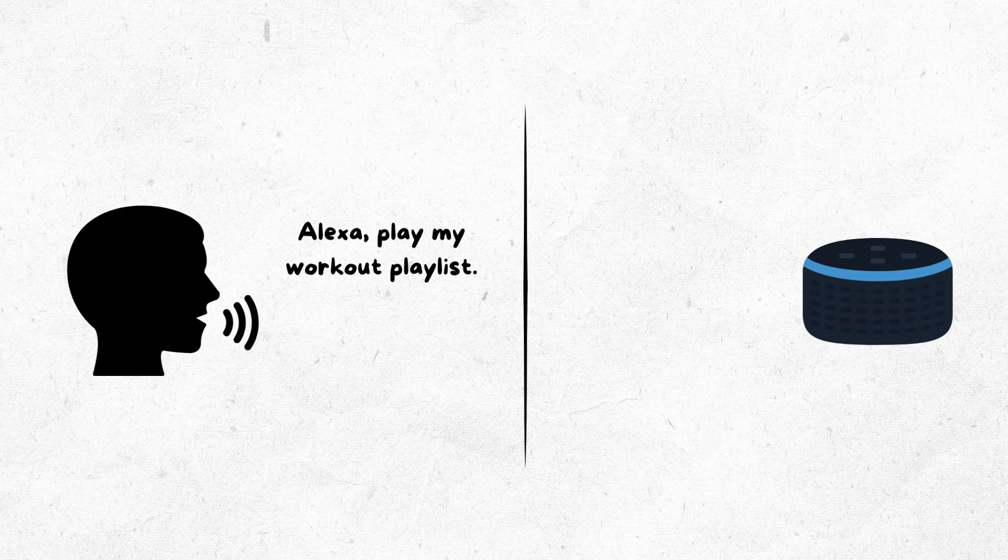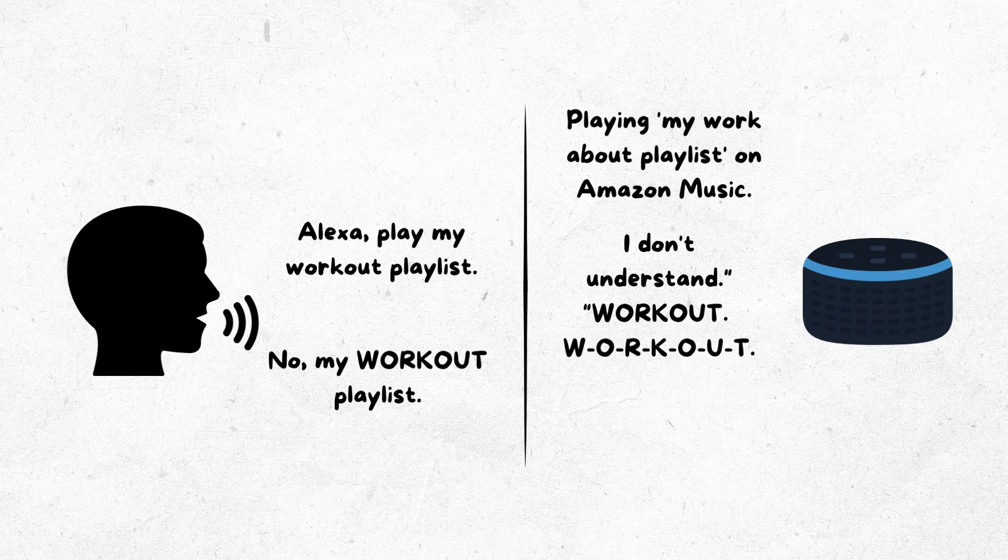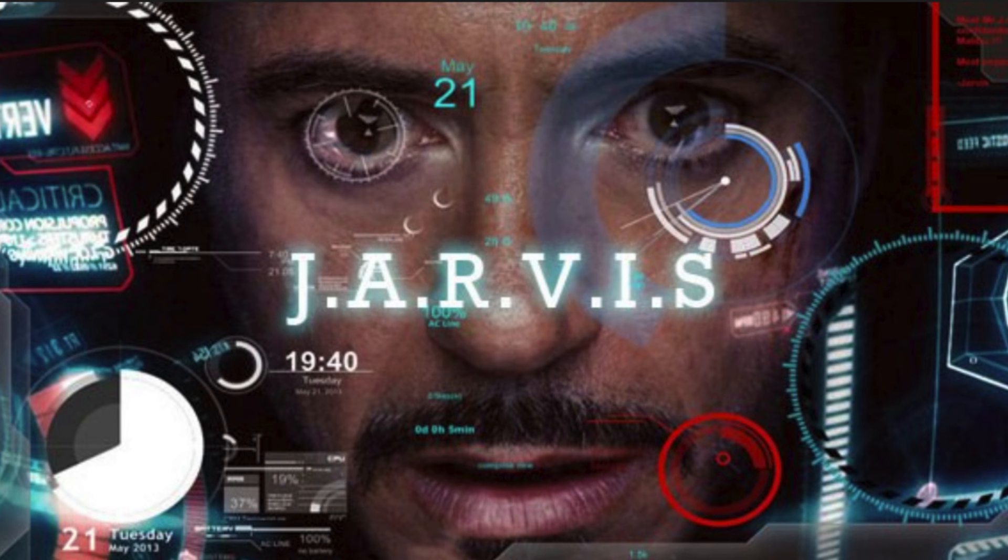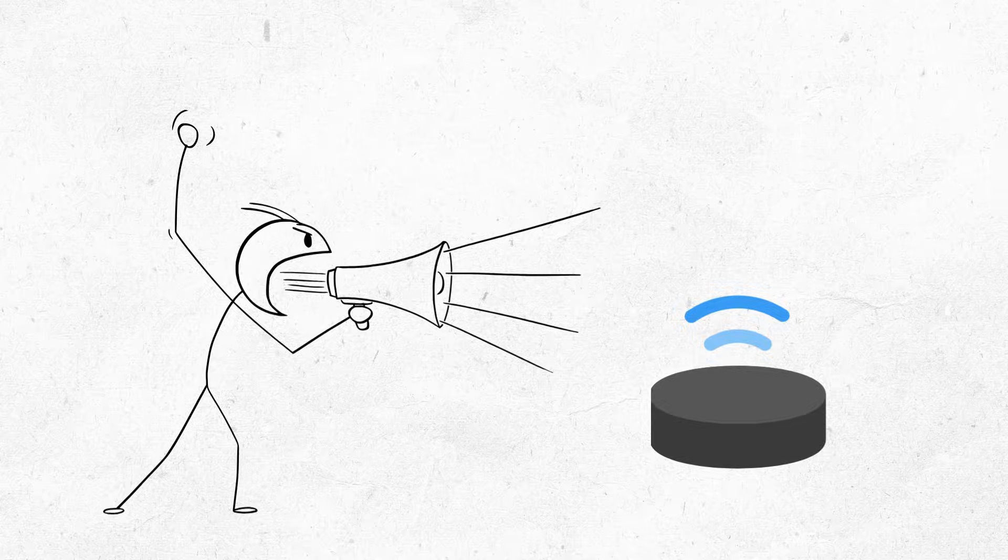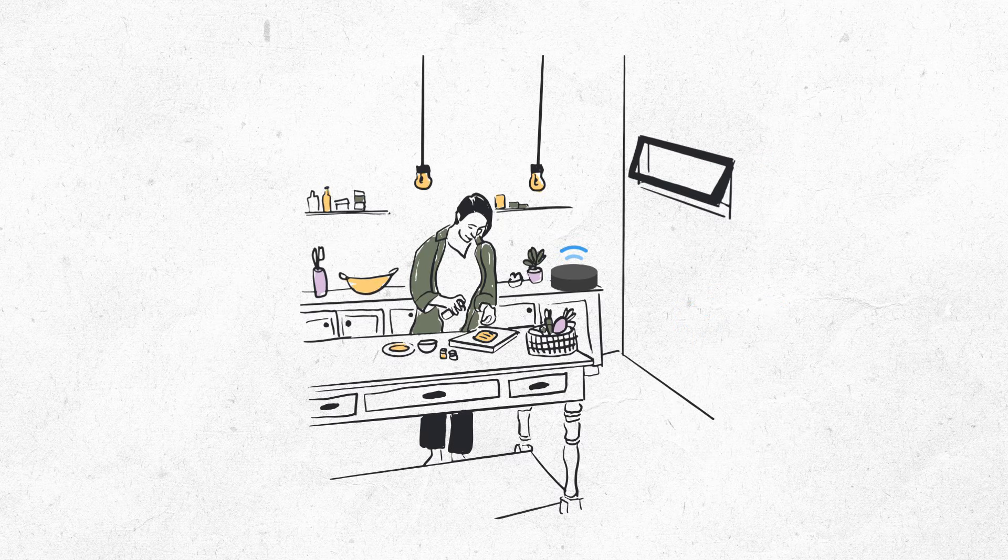They don't work well. Alexa, play my workout playlist. Playing my work about playlist on Amazon Music. No, my workout playlist. I don't understand. Workout. W-O-R-K-O-U-T. Here's a workout routine from the web. We've all been there. The promise was Jarvis from Iron Man. The reality is a speaker that misunderstands you constantly and mostly tells you the weather. Expensive kitchen timers.